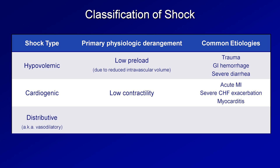Then there is distributive shock, also occasionally referred to as vasodilatory shock — shock from low SVR. The main etiologies here are sepsis, anaphylaxis, and acute spinal cord trauma. When leading to shock, these are more commonly called septic shock, anaphylactic shock, and neurogenic shock respectively.